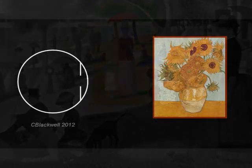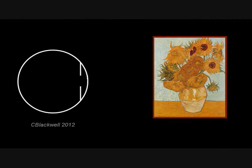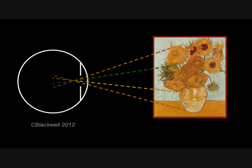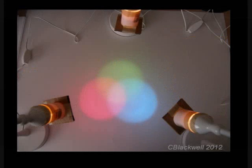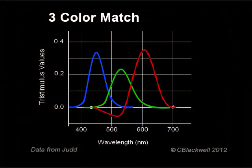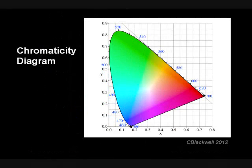In this series, we are covering color vision in three steps: color in light, reception by the eye, and perception by the brain. In the first set of videos, we covered color basics — in particular, using light in additive creation of color, color matching, and the creation of the color map called the chromaticity diagram.